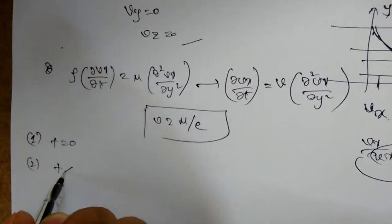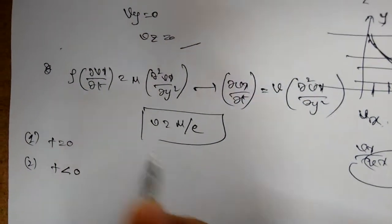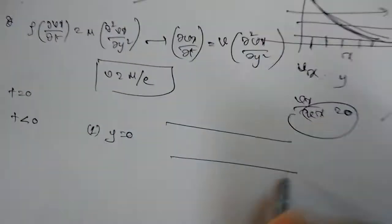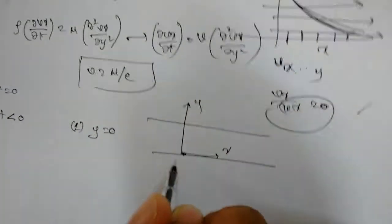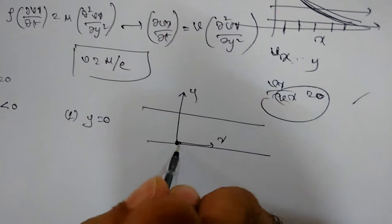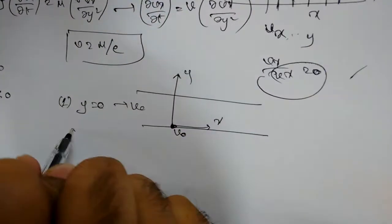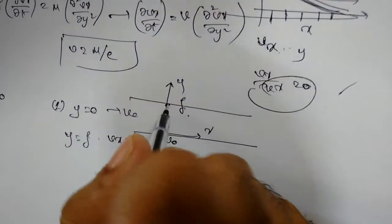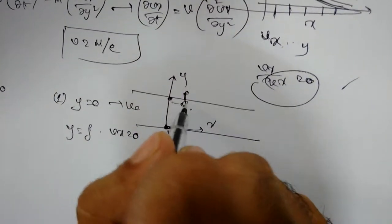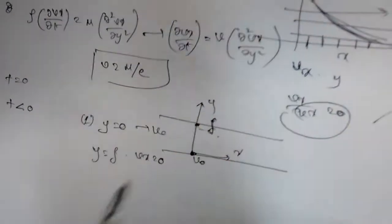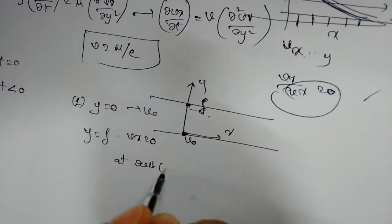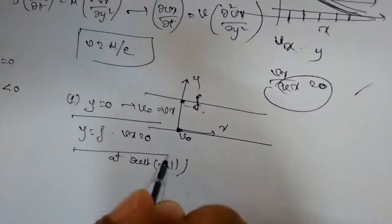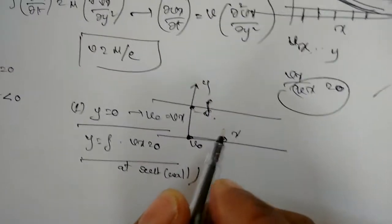Now we apply the boundary and initial conditions. At t less than zero (fluid at rest) and at t equal to zero: at y = 0, vx = v₀ (the wall velocity at the origin); at y = δ (some distance away), vx = 0. So the boundary conditions are: y = 0 gives vx = v₀, and y = δ gives vx = 0.